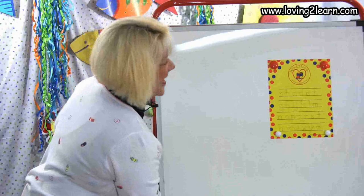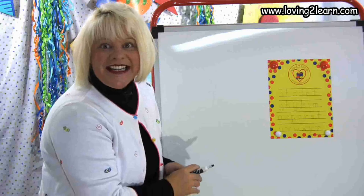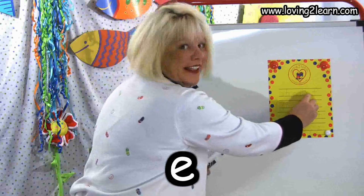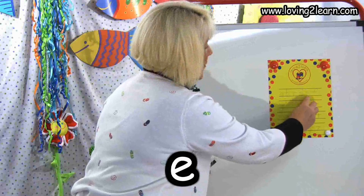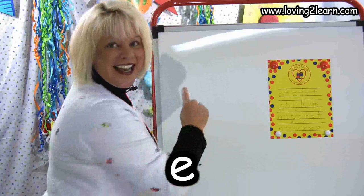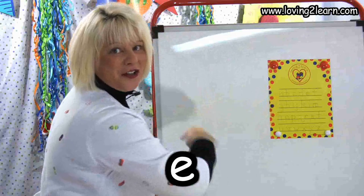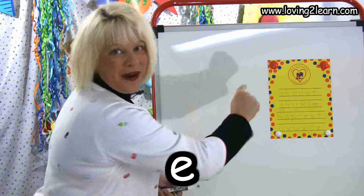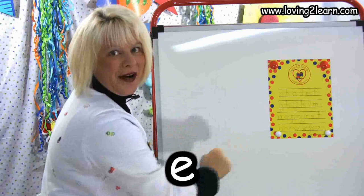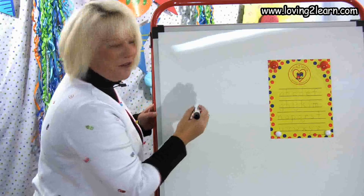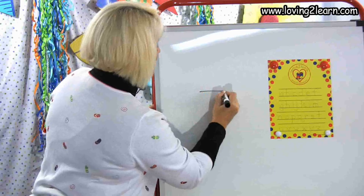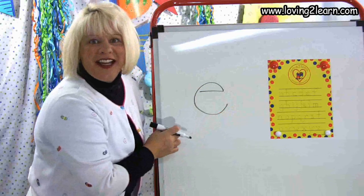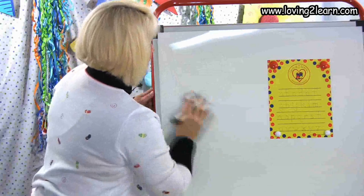The next letter is the letter E. We go straight line over and circle around. Let's do it: straight line over, circle around. Let's do it on the whiteboard: straight line over, circle around. There's the letter E.